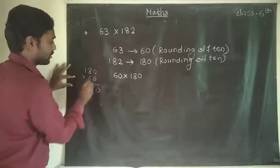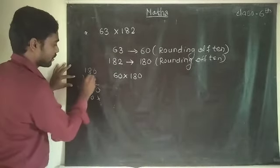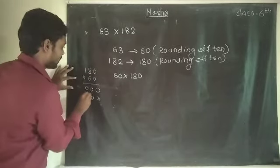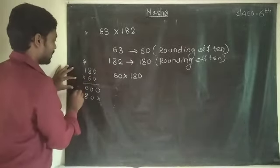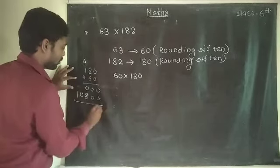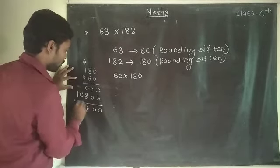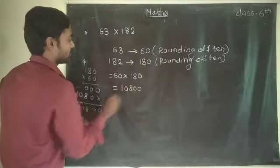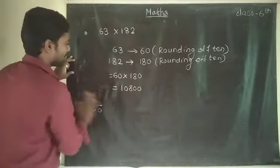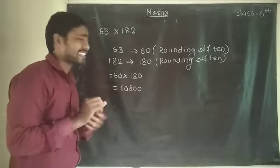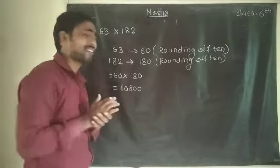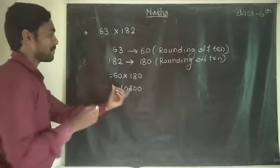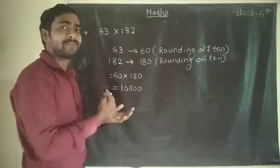Working out 60 × 180: the answer is 10,800. So our estimated or reasonable answer is 10,800. But this answer process was complicated. Let's also find the actual correct answer. The actual multiplication of 182 × 63 gives 11,466. So there is quite a difference between the estimated answer 10,800 and the correct answer 11,466.